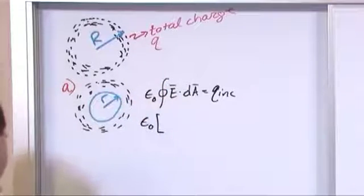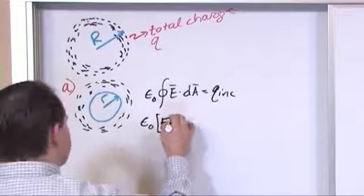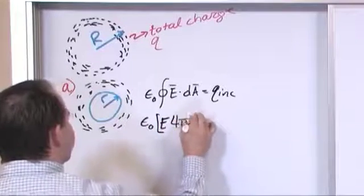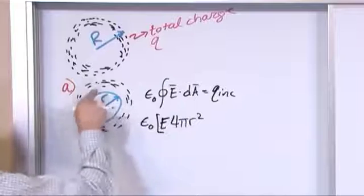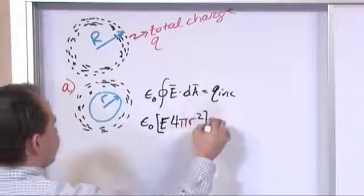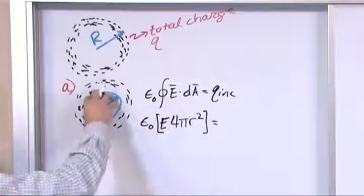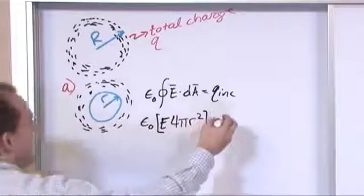What you're going to have is E times 4πr² because that's the surface area of a sphere, and that's going to equal the charge included inside of the sphere, which is zero.